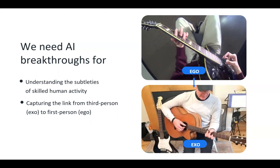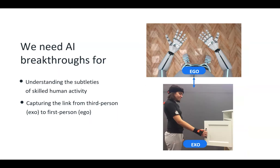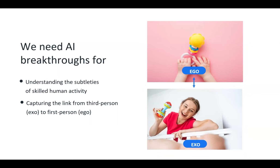We also face the challenge of capturing the link from what we see in others' actions onto our own. Think about the last time you tried to pick up a new physical skill by watching someone else do it. You have a honed ability to translate actions you see as an observer onto yourself — a core principle of visual learning. We need AI to be able to do the same: to relate what two different views show — say a guitar coach's view and a learner's view — requiring new capture and new models to establish this ego-to-exo link.